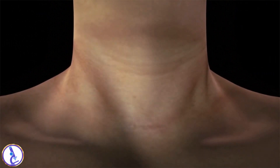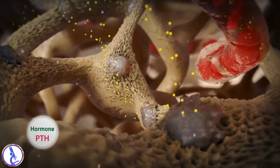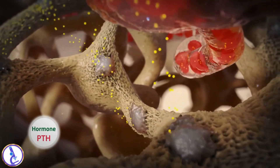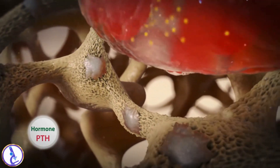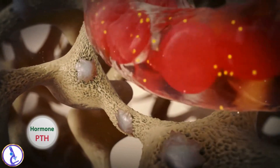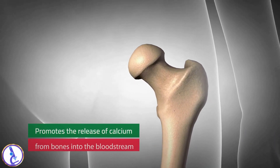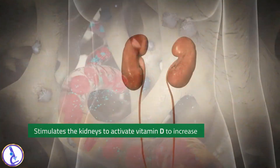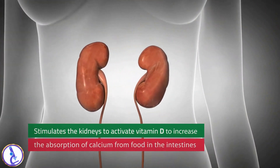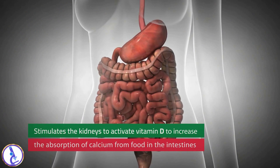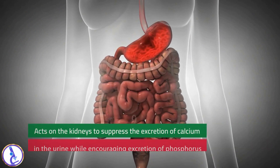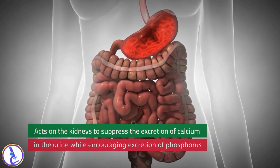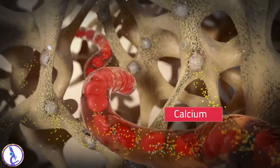Normally, these glands secrete PTH into the bloodstream in response to low blood calcium levels. The hormone works in three ways to help raise blood calcium levels back to normal: it promotes the release of calcium from bones into the bloodstream; it stimulates the kidneys to activate vitamin D to increase the absorption of calcium from food in the intestines; and it acts on the kidneys to suppress the excretion of calcium in the urine while encouraging excretion of phosphorus.